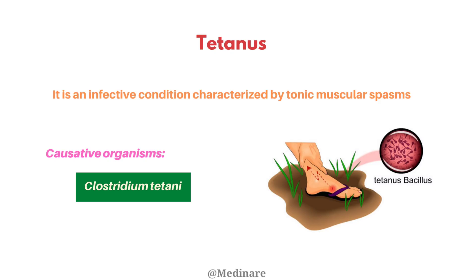Tetanus is an infective condition characterized by reflex muscle spasm often associated with tonic-clonic convulsions. The main culprit is Clostridium tetani, the causative agent. Tetanus is totally different from the term tetany, which is caused by reduced calcium level or hypoparathyroidism, whereas tetanus is caused by Clostridium tetani, a bacterial infection.